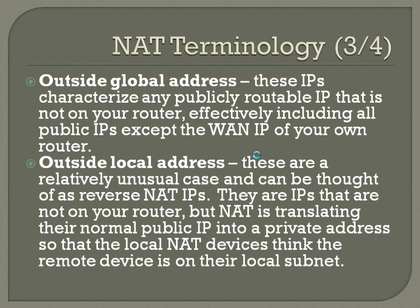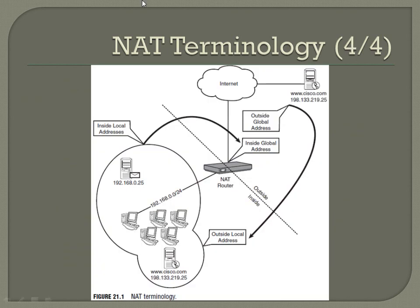Here's a quick example of each of these setups. You've got your NAT router with the public internet on one side. Your inside local addresses are all of your LAN devices — pretty much anything in the 192.168.0.0 range. You've got a single public IP for your WAN interface — that's your inside global address. Then anything out on the public internet is usually an outside global address.